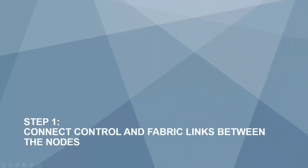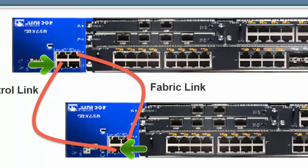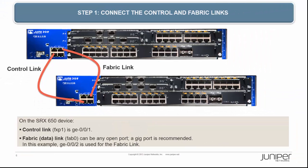Step 1: connect control and fabric links between the nodes. The control and fabric links are back-to-back connections between the devices forming the cluster. On the SRX650 device, the control link or FXP1 is GE 0/0/1. Connect GE 0/0/1 on device A to GE 0/0/1 on device B. The GE 0/0/1 port on device B will be referred to as GE 9/0/1 when clustering is enabled.